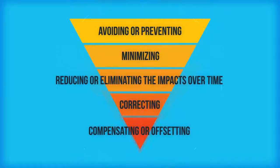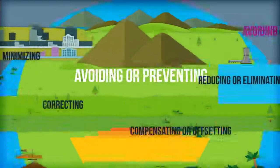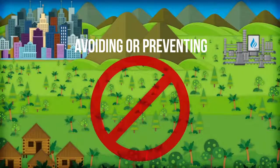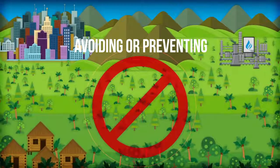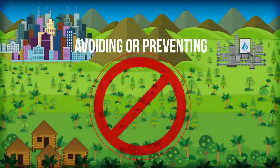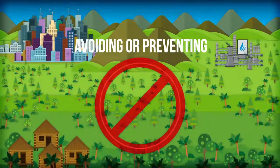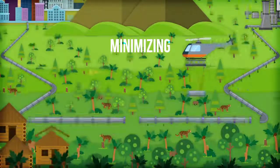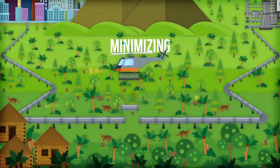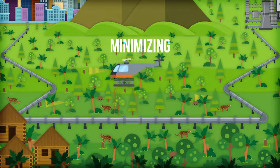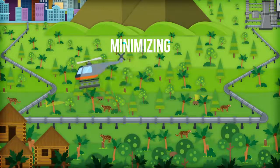In descending order of preference, mitigation measures can be categorized as: avoiding or preventing impacts altogether by not taking a certain action, changing the location or design, or using a different type of technology; and minimizing impacts by limiting the duration, degree, or magnitude of the impacts that cannot be avoided.